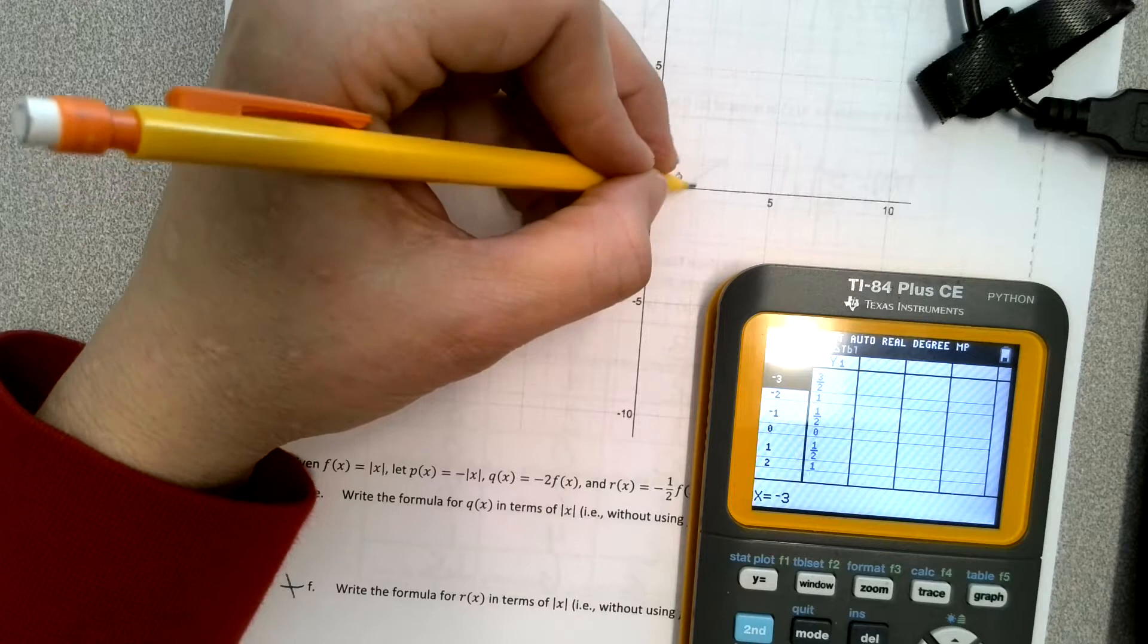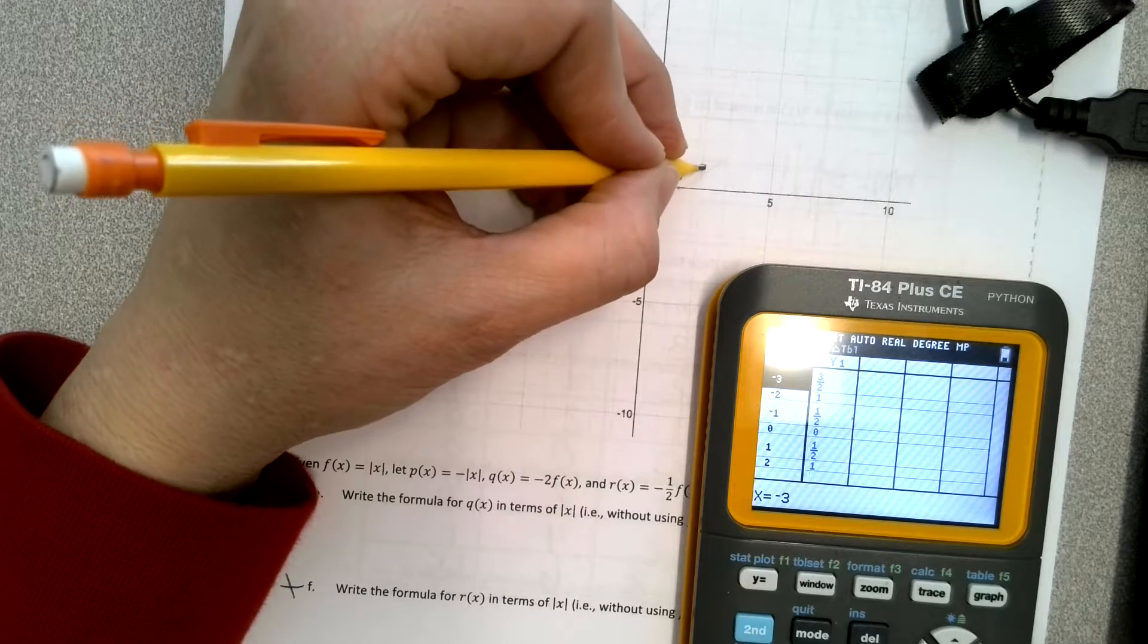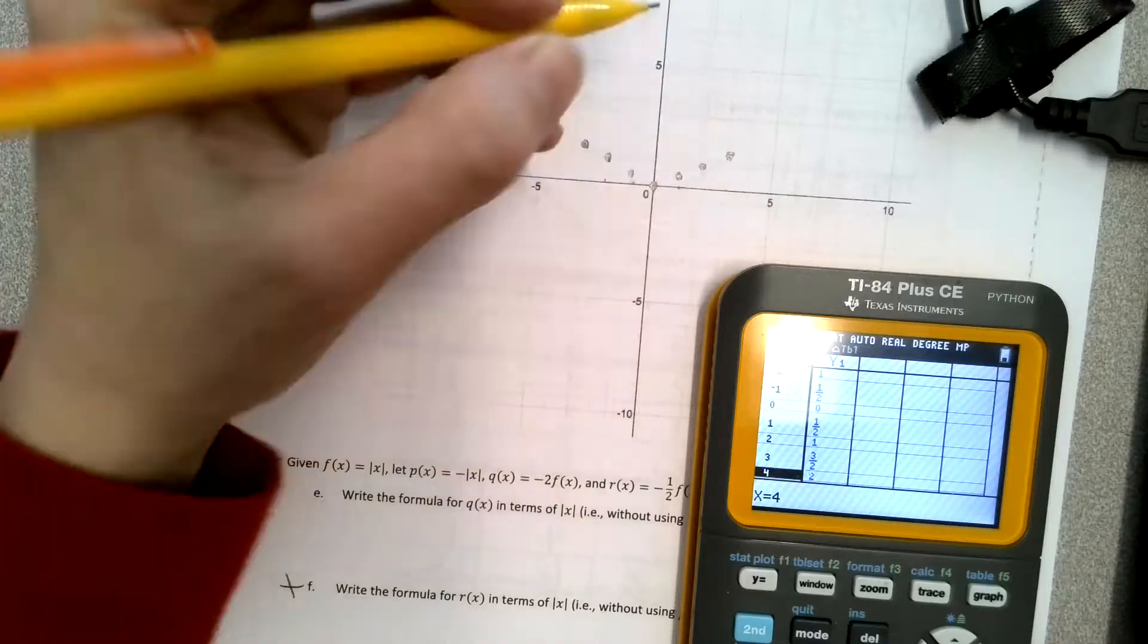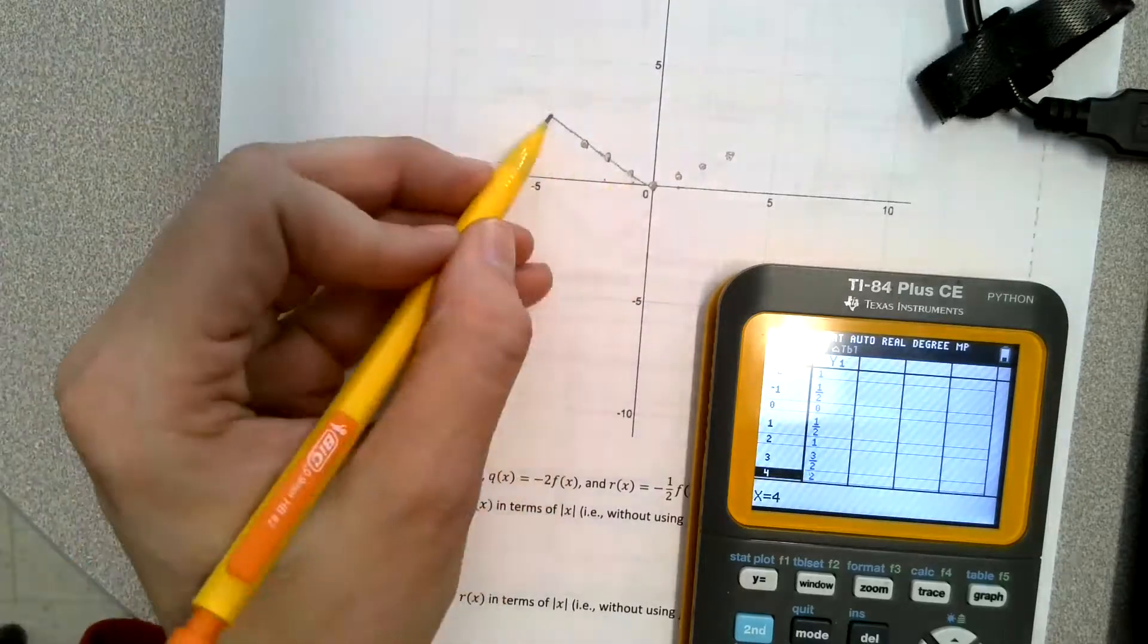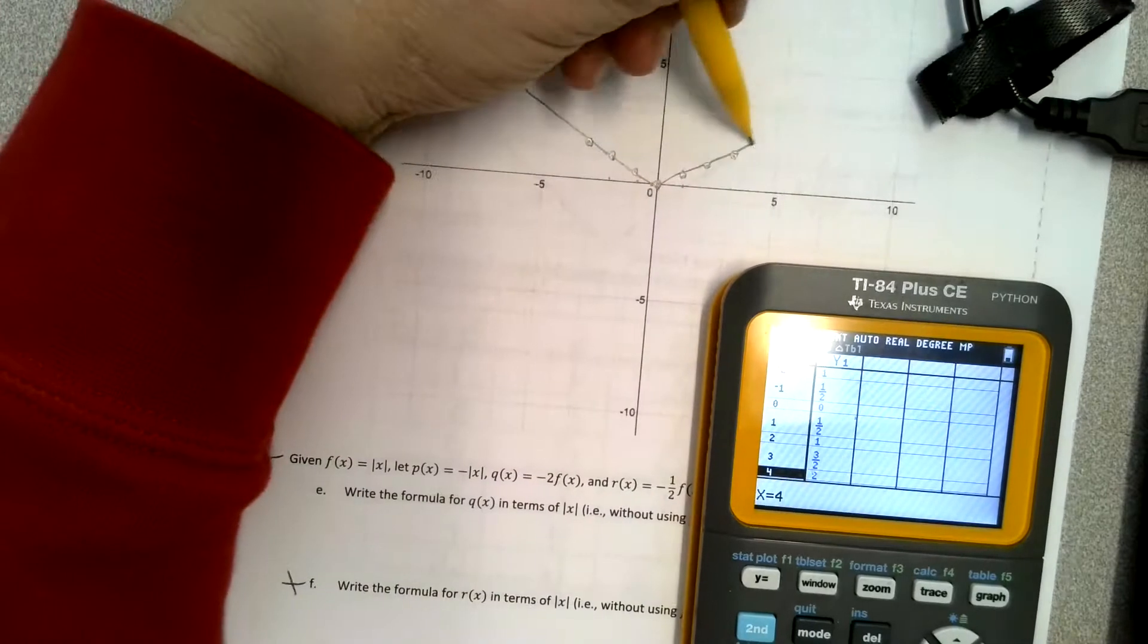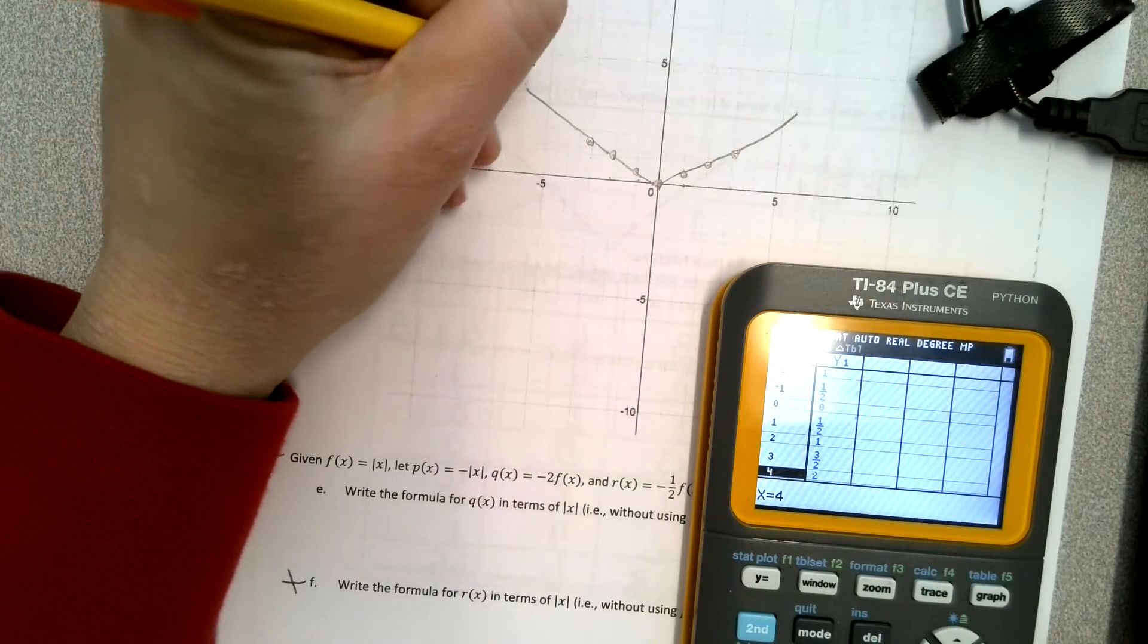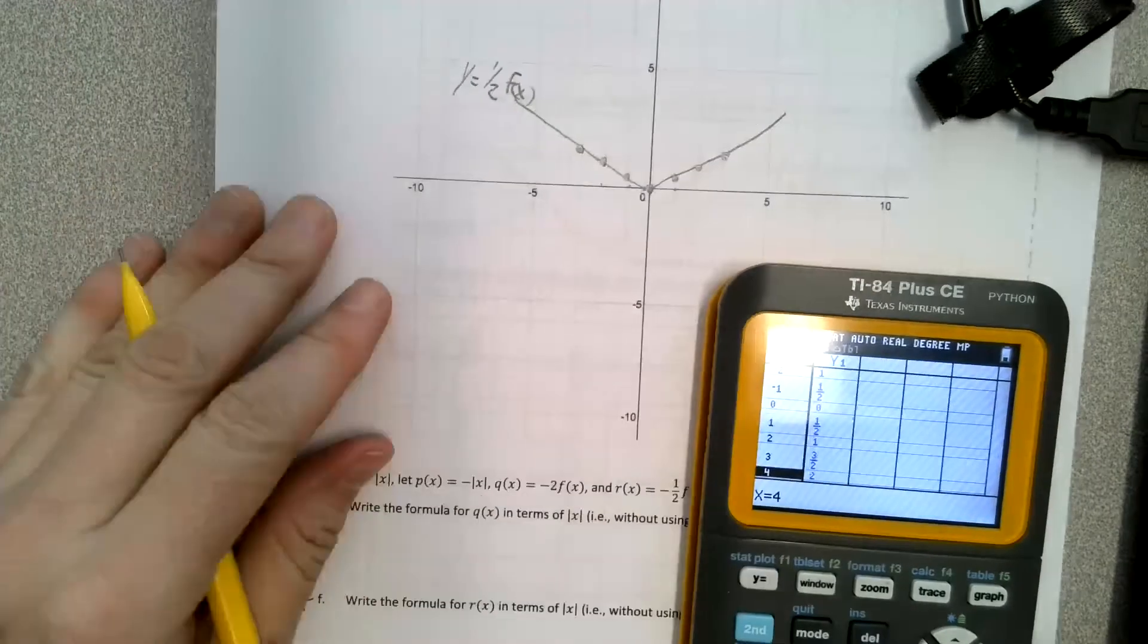Up half, over to the 2, up 1 and a half. And as you can see, this vector is just wider. And this vector is the y equals half f of x.